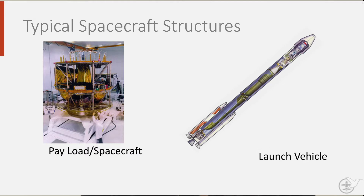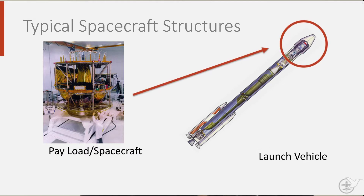A launch vehicle is a transporter of spacecraft, often rockets such as the US-built Saturn V, the Falcon 9 from SpaceX, the European Ariane 5, the GSLV from India, and the Russian Soyuz rocket. They often burn up after launch, although reusable launch vehicles are slowly entering the market.